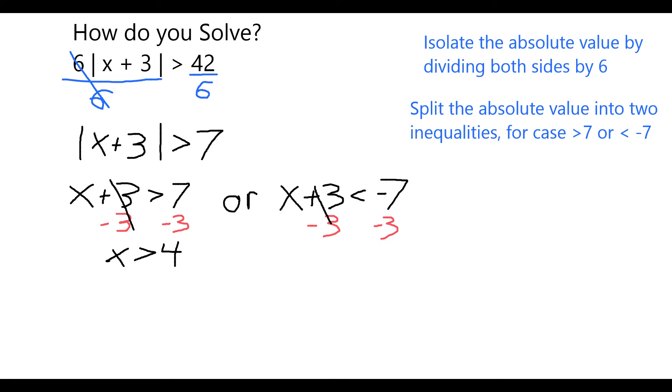Likewise on the other inequality the 3's cancel and the other possibility is x is less than negative 7 minus 3 which is negative 10.